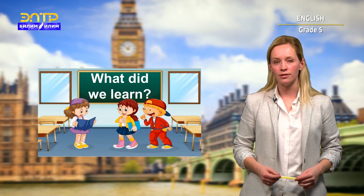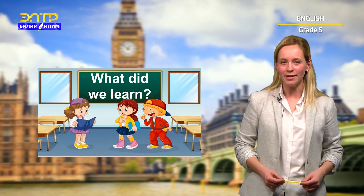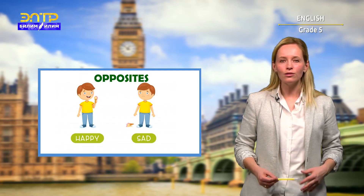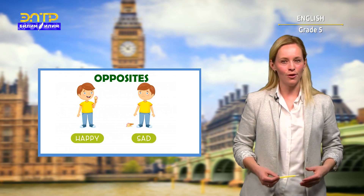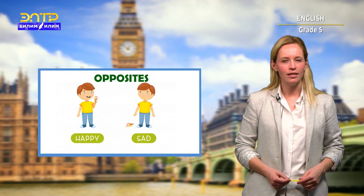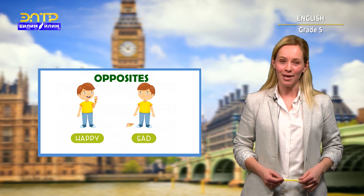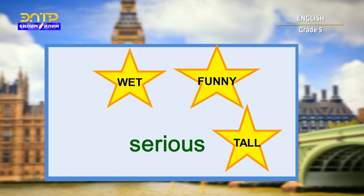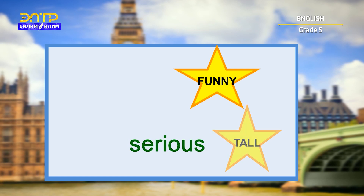Our lesson is coming to the end. Let's revise what we learned today. Words like big and small, happy and sad are called opposite adjectives. The more opposite adjectives you know, the better English you speak. Let's revise all adjectives from this lesson and play a game. Say the right opposite and get the star. What's the opposite of the word serious? It's funny. That's right.